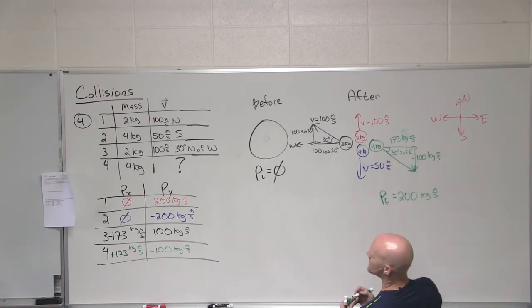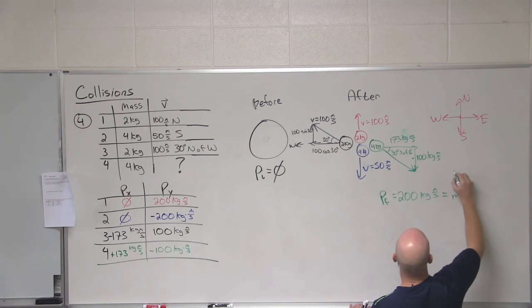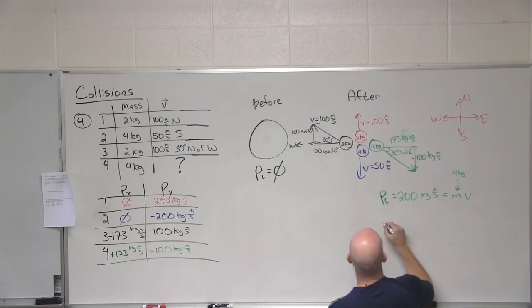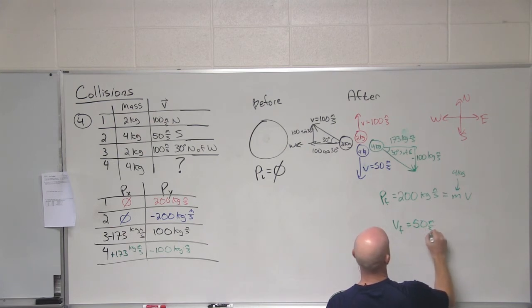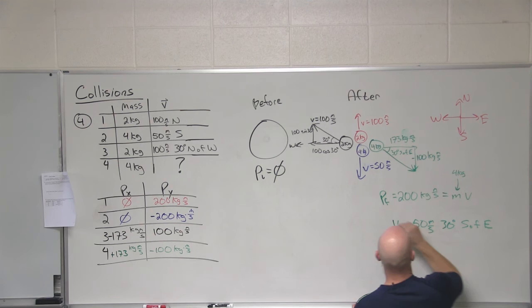So that's the momentum, but does the question actually ask for its momentum? It's velocity. So in this case, it's equal to mv. And what's his mass again? Four kilograms, right? So then what's his velocity? Good. 50 meters per second at an angle of 30 degrees south of east. Awesome.